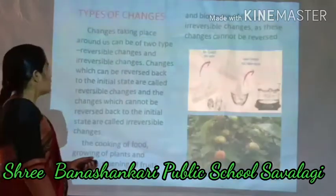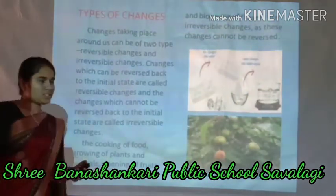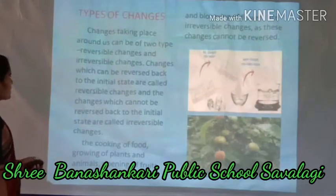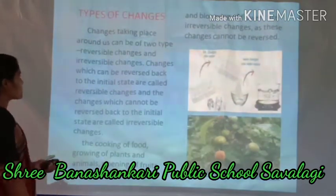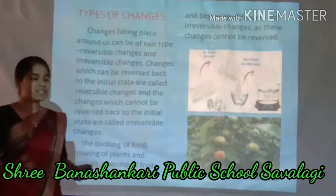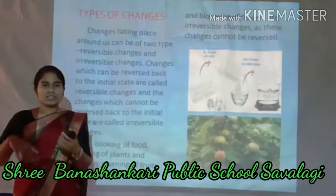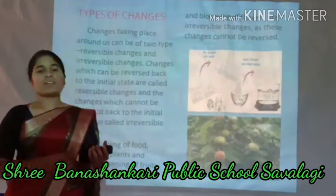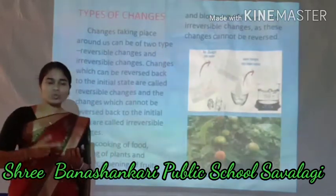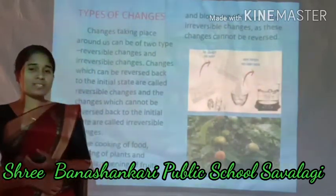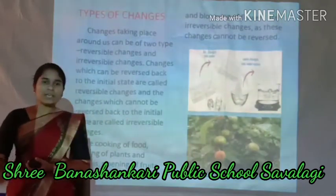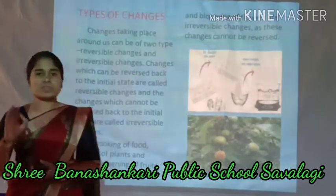Here, types of changes. Changes that take place around us can be of two types: reversible changes and irreversible changes. The changes that happen in our surroundings are classified into two categories — they are reversible and irreversible changes.